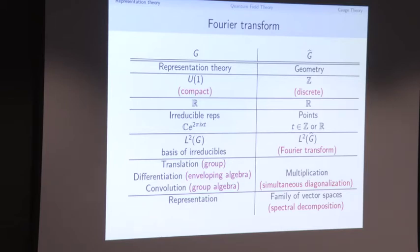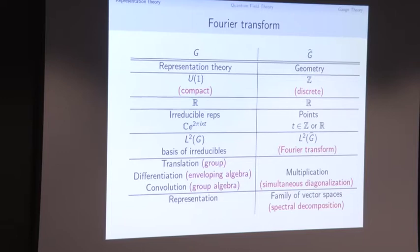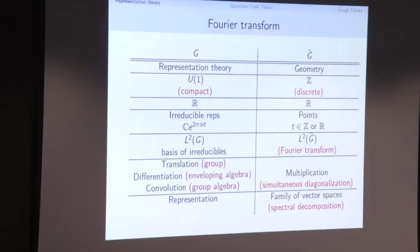What does the Fourier transform do? Its whole point is that we've taken anything coming out of the group and translated it into something much more geometric. The translation action of the group, differentiation by the Lie algebra, more general differential operators from the enveloping algebra, the convolution action — all operators you construct out of the group become multiplication operators on the other side. They've all been simultaneously diagonalized.